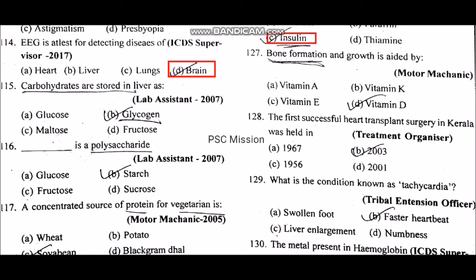EEG is related to the brain. Carbohydrates are stored in the liver. Starch is a polysaccharide. A concentrated source of protein for vegetarians is soya bean.